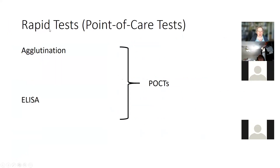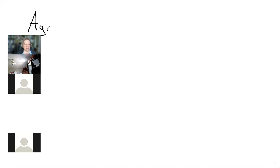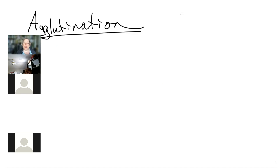We're going to start by talking about rapid tests — point of care tests, or POCTs. The two I'm going to cover rely on agglutination and ELISA techniques to provide diagnostics. Let's go to the whiteboard and cover some of the more common ones. Agglutination takes advantage of the ability of antibodies to agglutinate, or clump, pathogens.